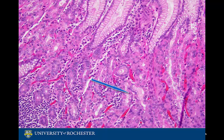Chief cells are located in the base of fundic glands. They are quite ordinary in appearance and secrete pepsinogen and a weak lipase.